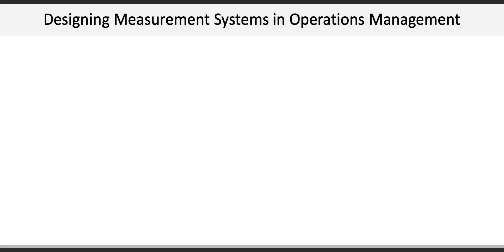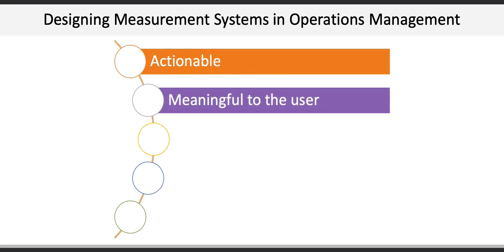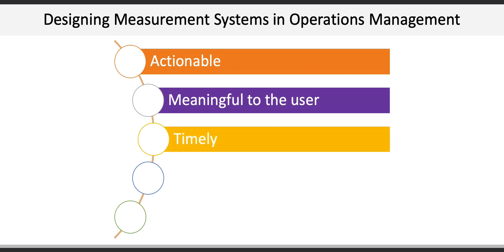Another learning objective in the chapter explained how to design a good performance measurement system. Good performance measures are, first, actionable — meaning immediate action can be taken to make improvements. Measures must also be meaningful to the user and timely; if it takes too long to get the result, it may be too late to take action. Technology and data analytics are now enabling more performance to be measured in real time, and that's pretty cool.